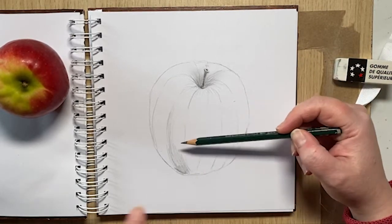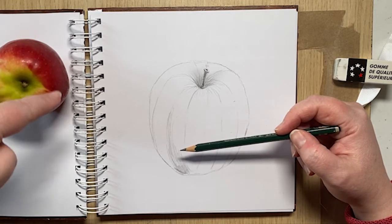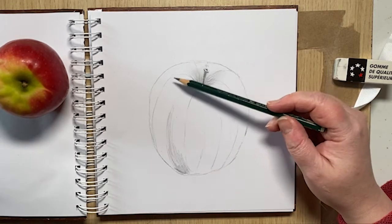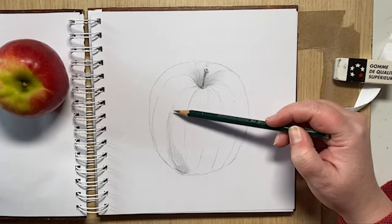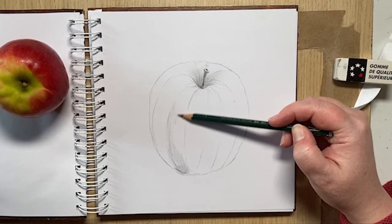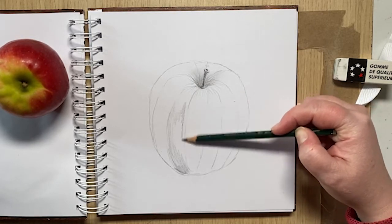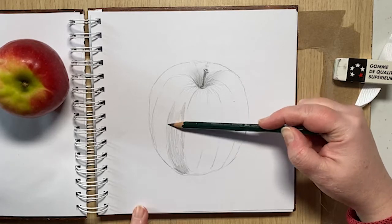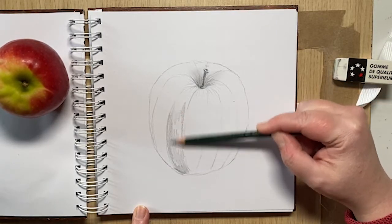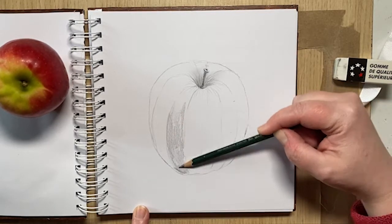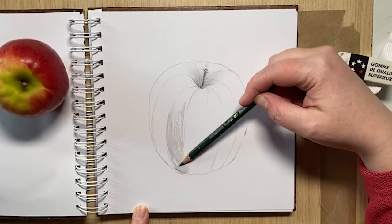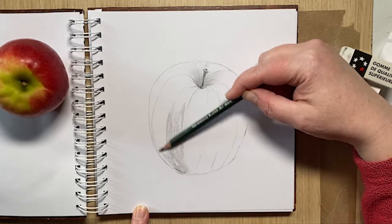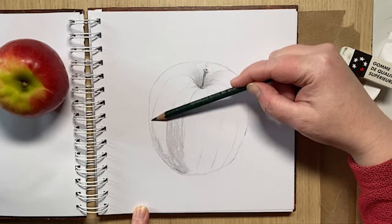I'm just going to shade upwards. I'm still going in line with those contours. I'm concentrating where the light's hitting the apple, so it's kind of hitting the apple at the top, around this kind of ringed bit area. So I'm just going to just carefully shade up until there. I'm using the side of my pencil to get quite a flat shaded area.